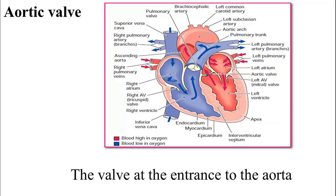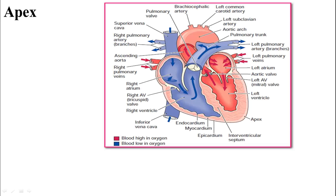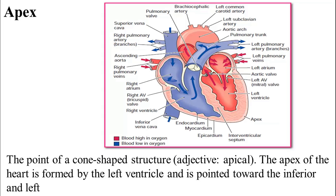The aortic valve is at the entrance to the aorta. In aortic valve regurgitation, there is a malfunction of the aortic valve and blood flows backward into the left ventricle. The apex is the tip or point of any structure, such as the heart. The apex of the heart is formed by the left ventricle and points toward the anterior and to the left of the body.